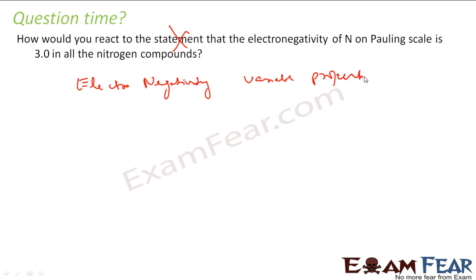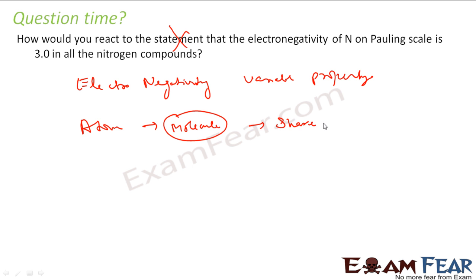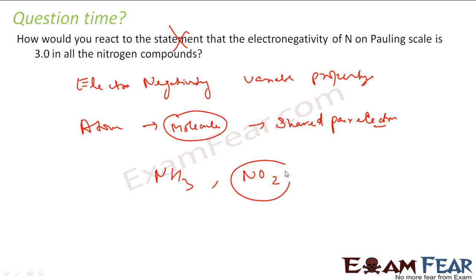Electronegativity is a variable property. It is the property of an atom in a molecule to attract a shared pair of electrons. So when you talk about electronegativity you have to talk about a specific molecule. For example, the electronegativity of nitrogen in NH3, NO2 — all are different. You can't talk about electronegativity unless you specify a particular compound.